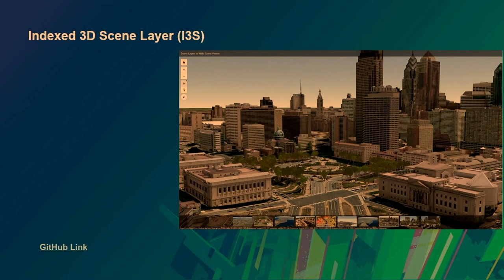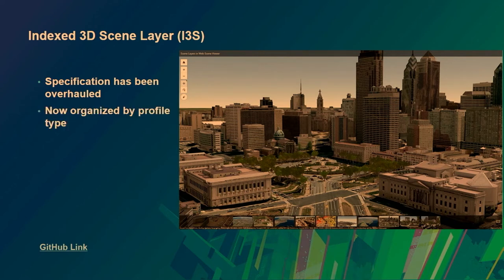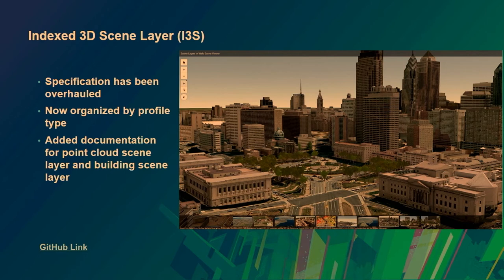We have completely overhauled the spec, so if you have looked at it before, please take a look again. We have completely rewritten the readmes, format documents, and other details to make the spec more intuitive and readable. One of the biggest changes is it's now organized by profile type — if you're only interested in 3D object scene layers or point clouds, you can see all the documentation in one place organized by profile type. In the most recent release, which was last Friday, we added official documentation for point cloud scene layers as well as the building scene layer.